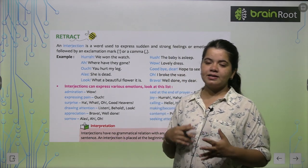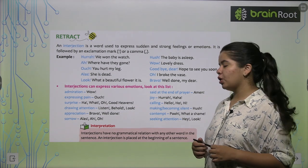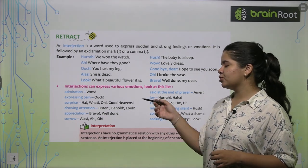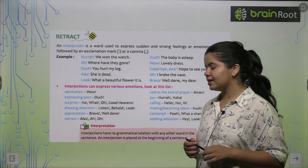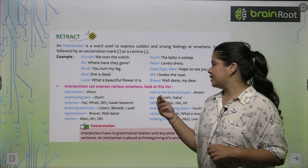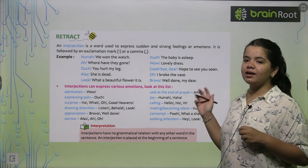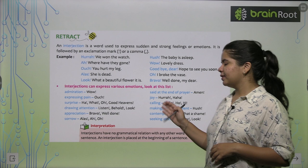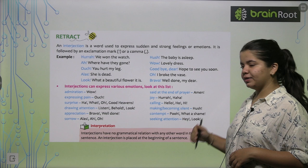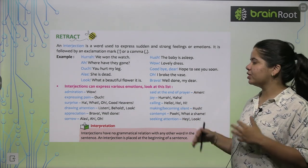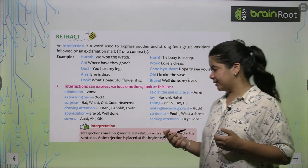Next is appreciation. If you want to appreciate someone, you can say Bravo or Well done. For expressing sorrow or sadness, you use Alas, Oh, or Ah. Said at the end of a prayer - when you finish a prayer, the word used at the end is Amen. For joy, you can use Hurra or Haha. So these are some of our interjections with which you can connect various types of emotions.